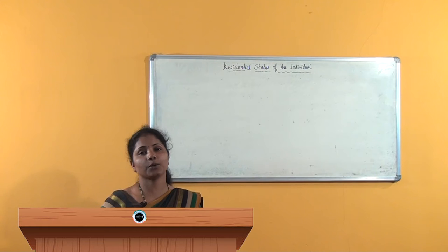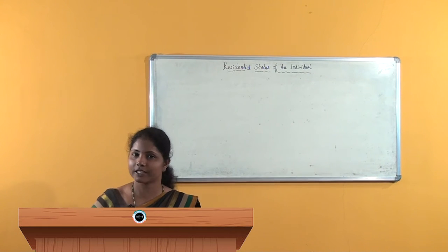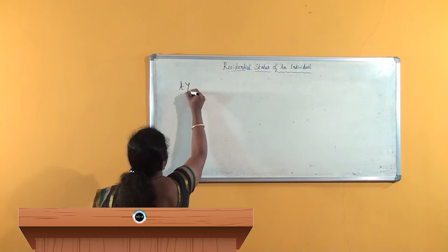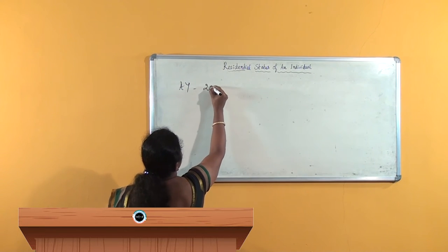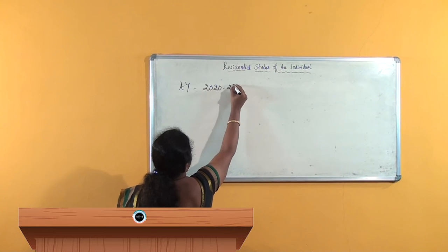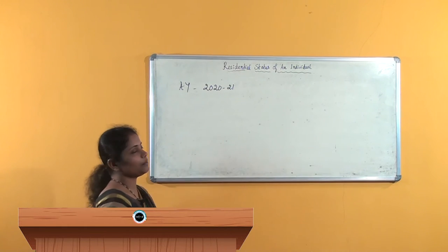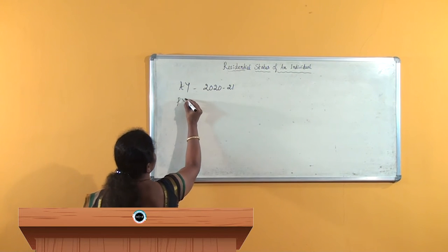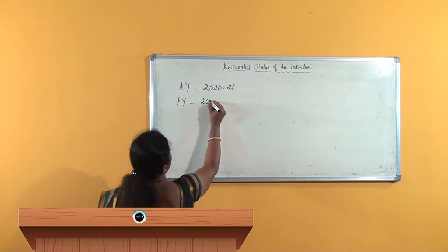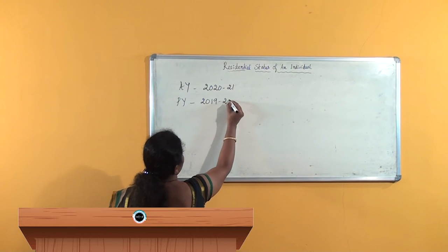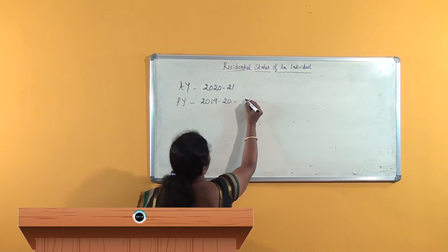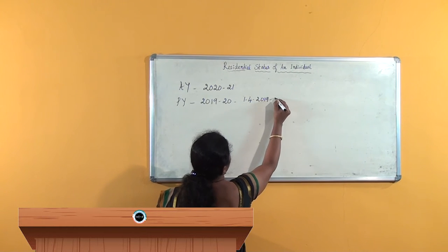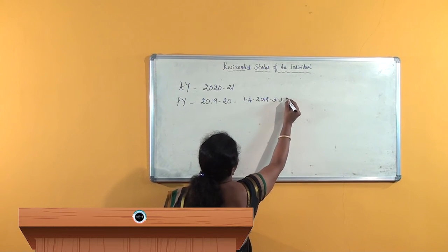So we have to assess what is the residential status of Mr. Virat for the assessment year 2020-21. Whenever the assessment year is 2020-21, the previous year is 2019-20 — in the sense, it commences on 1st April 2019 and ends on 31st March 2020.